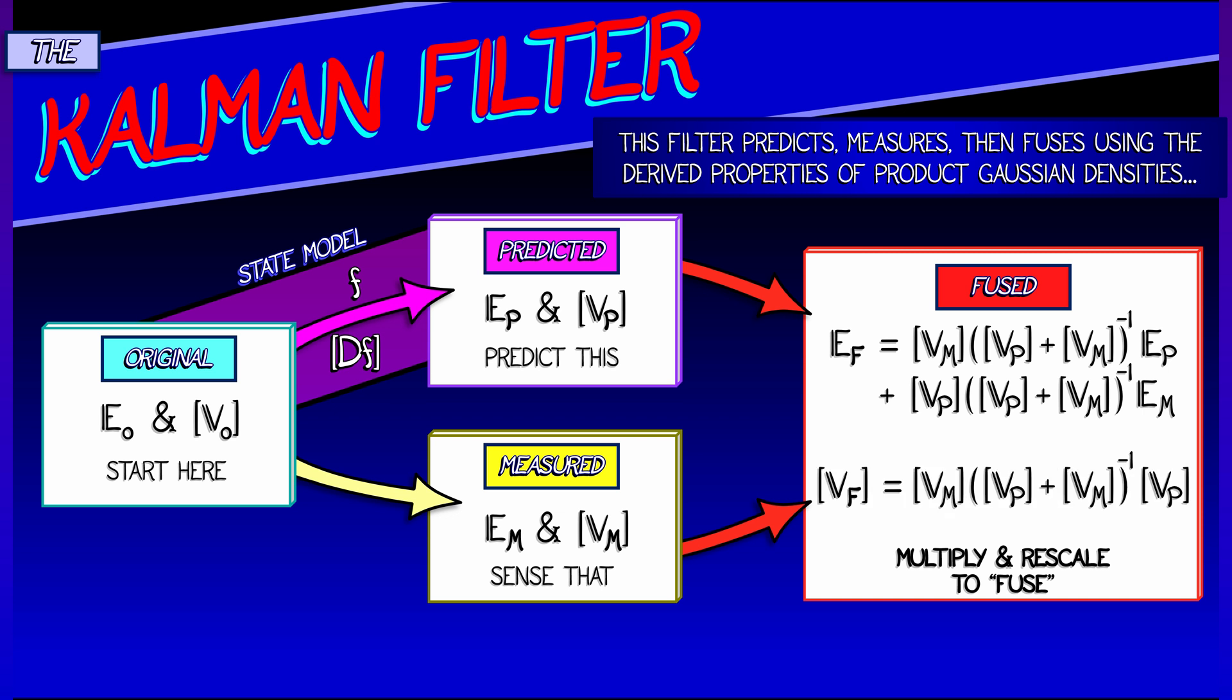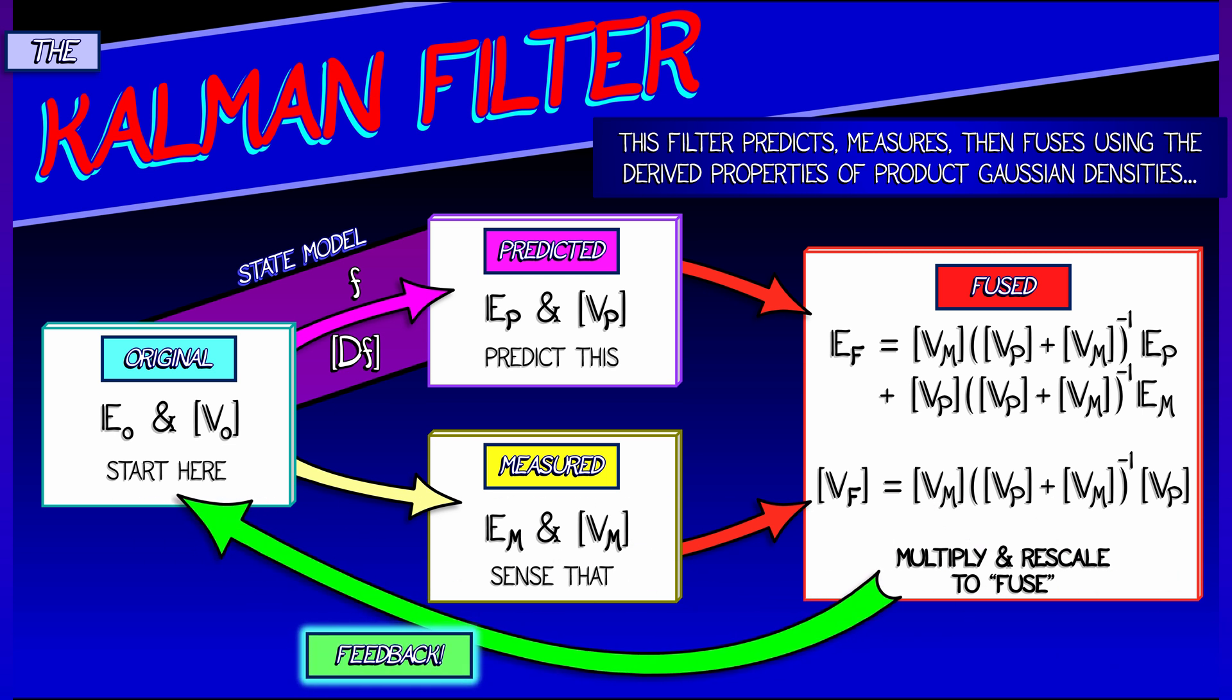Our fused covariance matrix, V f, is quantity, V p plus V m inverse, pre multiplied by V m, post multiplied by V p. Then the critical step is the feedback.